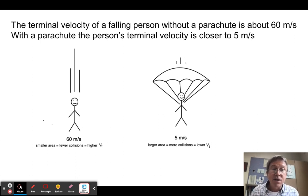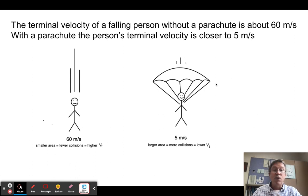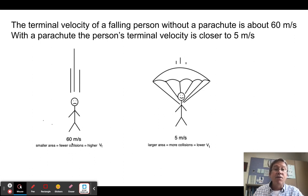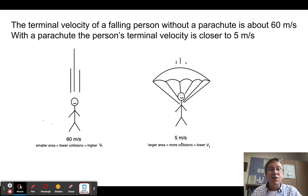If you're falling and you open up a parachute, your mass isn't going to change, but you're going to hit a lot more molecules. Therefore your terminal velocity is going to be a lot smaller—instead of falling at 60 meters per second, maybe when you're falling at five meters per second the net upward drag force equals the downward force on you. Five meters per second is almost 100% survivable. That's why we use parachutes.